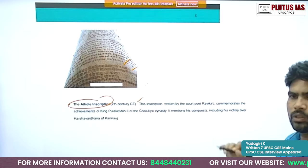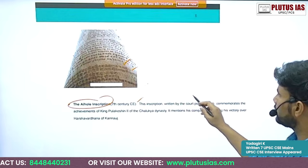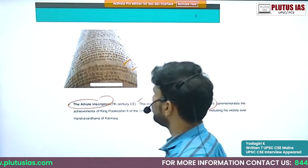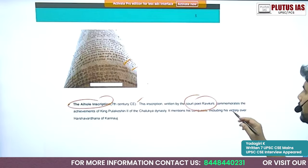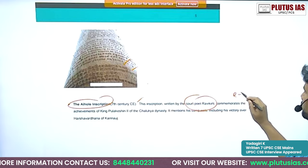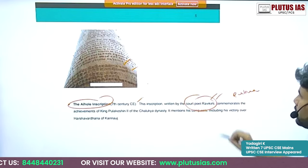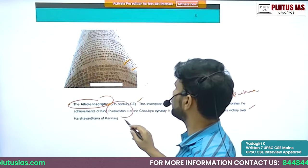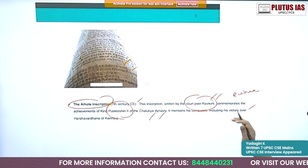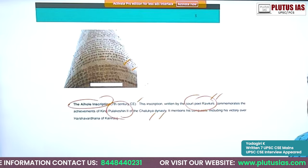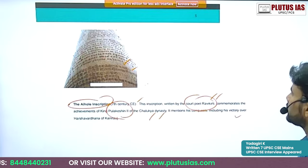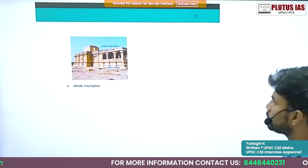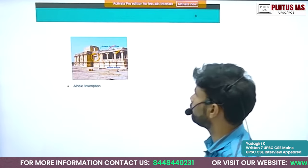The Aihole Inscription is from the seventh century AD. It is located at a place called Aihole and was commissioned by court poet Ravikirtti. It commemorates the achievements of King Pulakesi II of the Chalukya dynasty, including his conquests — notably his victory over Harshavardhana of Kanauj.